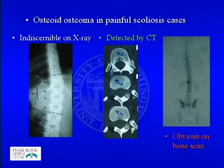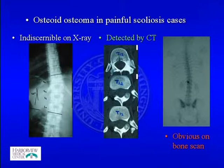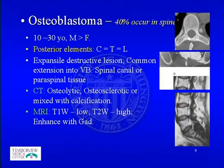Osteoid osteoma can sometimes be associated with painful scoliosis. For example, a young female with a mild curve and severe pain showed no lesion on x-ray, but CT scan revealed an osteoid osteoma at the posterior elements, which was very obvious on bone scan.